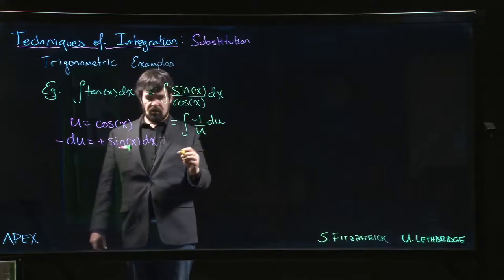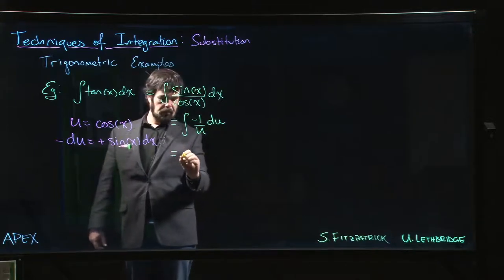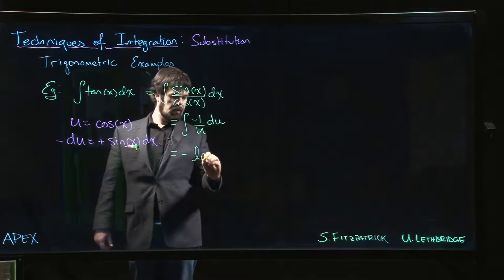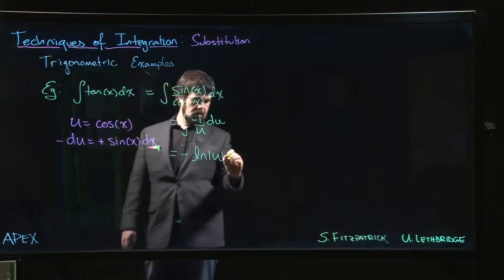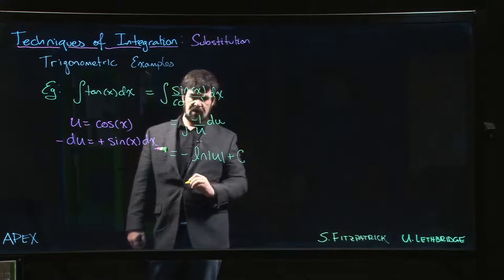And we know an antiderivative for 1 over u. That's just the natural log. So we get minus the natural log of the absolute value of u plus c.